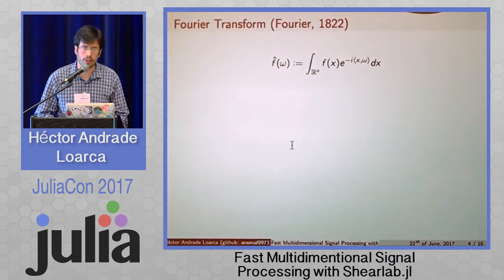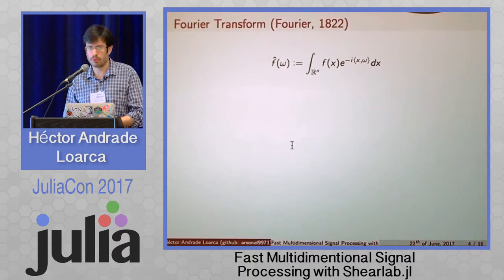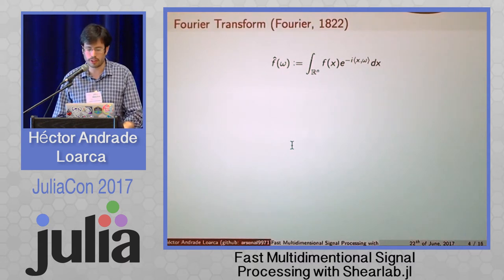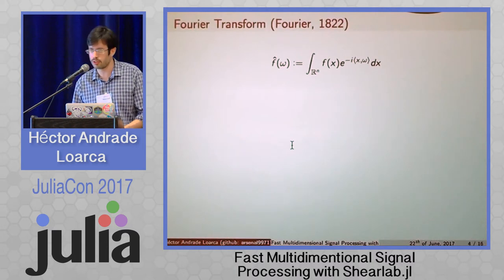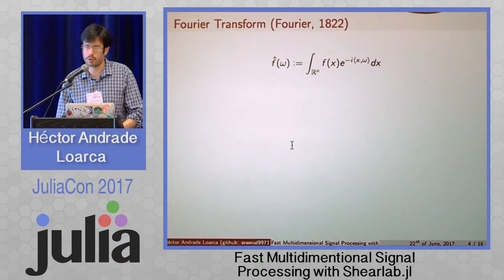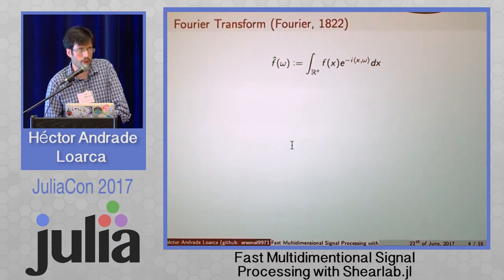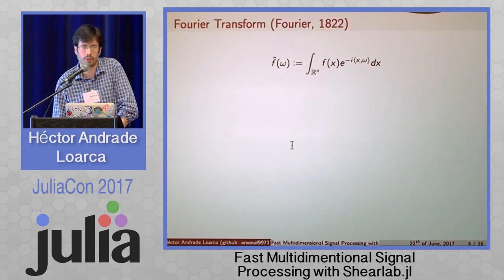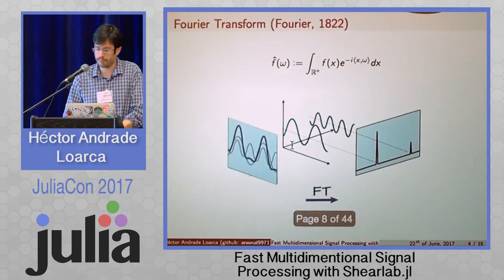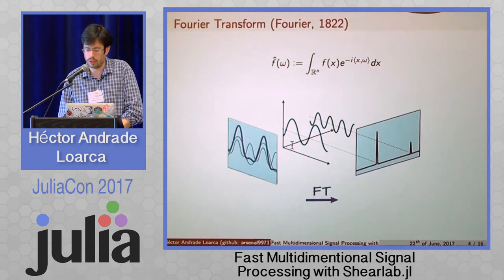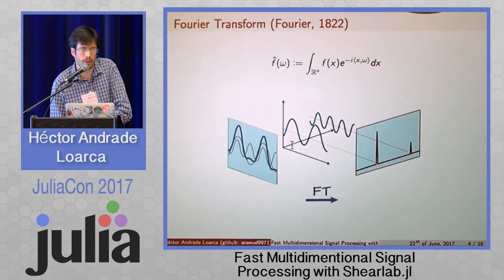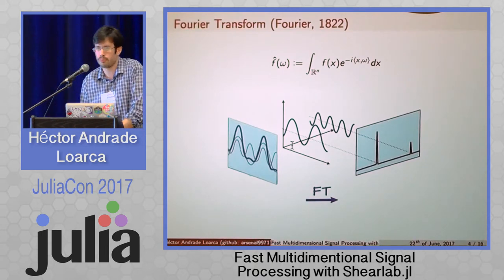Throughout history, there have been different attempts to build representation systems that sparsely represent data. The first well-known attempt was the Fourier transform, proposed by Joseph Fourier, a French mathematician, in the 18th century. He realized that some functions can be well-represented as a sum of cosine functions. The Fourier transform gives you the amount of energy at each frequency of the function. Therefore, very periodic functions are well-represented by cosines and sines.